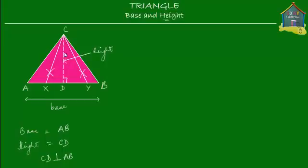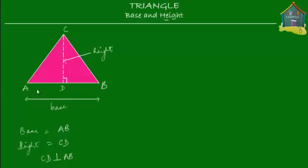Another point to note is that the height of the triangle is actually the shortest line from the top to the bottom. CX and CY are longer than CD, and it's only the perpendicular line that is the shortest. So line CD is the height of the triangle because it is the shortest — and perpendicular — line from the top corner to the base. The base is the bottom side and the height is the perpendicular line from the opposite corner to the base.